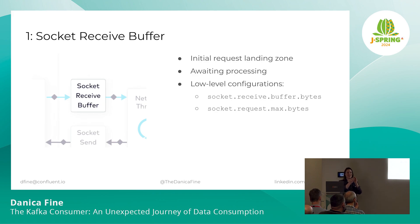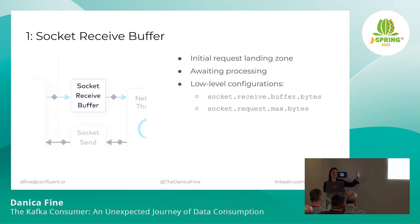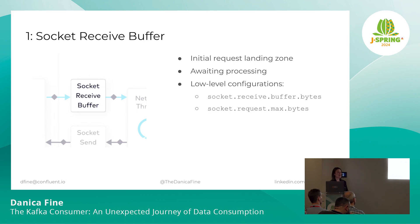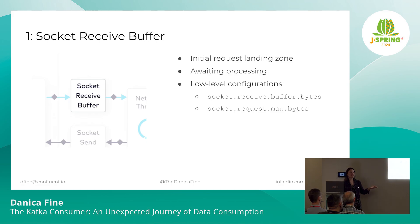We've crossed a very specific threshold in the process here — all the configurations we saw before are pretty much things you as application developers have control of. This is now the territory of those special few who are operating Kafka clusters. There are some low-level configs to change the size of this buffer, but the defaults are usually good enough. After a very short stay on the socket receive buffer, the request is going to be picked up by some available network thread for processing. Whichever network thread picks up this request is going to handle that request and response throughout its lifecycle on the broker — you can think of it as the Gandalf of our journey, always watching from afar.